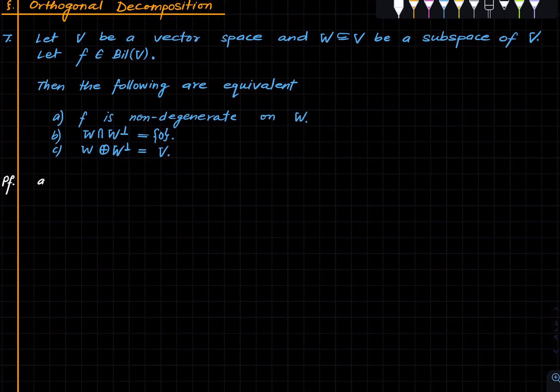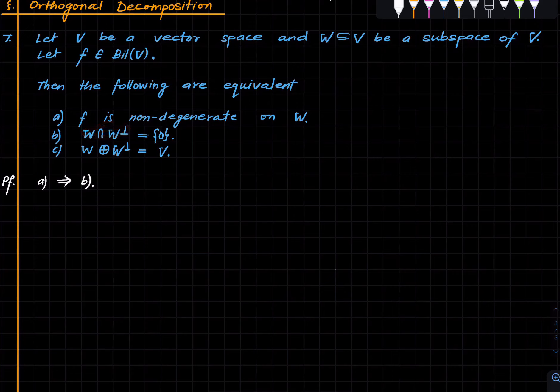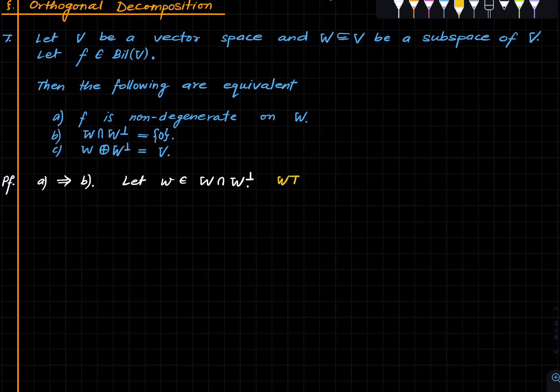A implies B. We want to show that W intersect W perp is zero, where we assume that F is non-degenerate on W. Fix a vector in it and we want to show that W is the zero vector. So how do we do this?